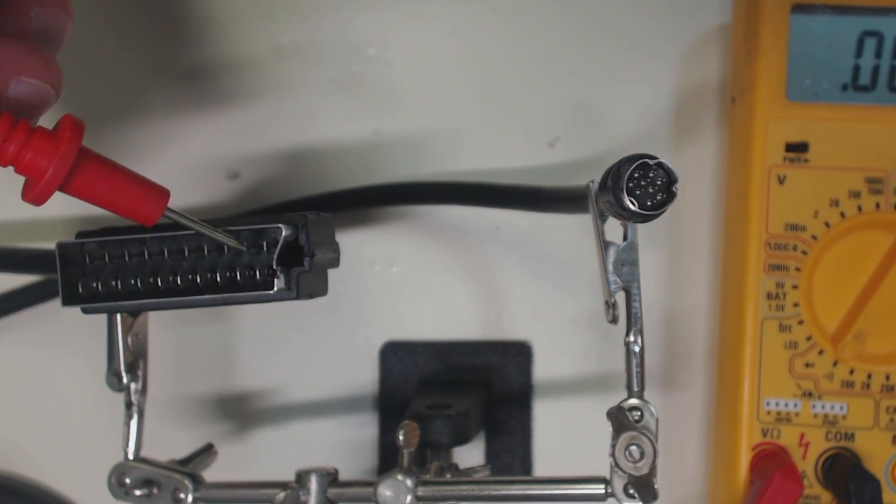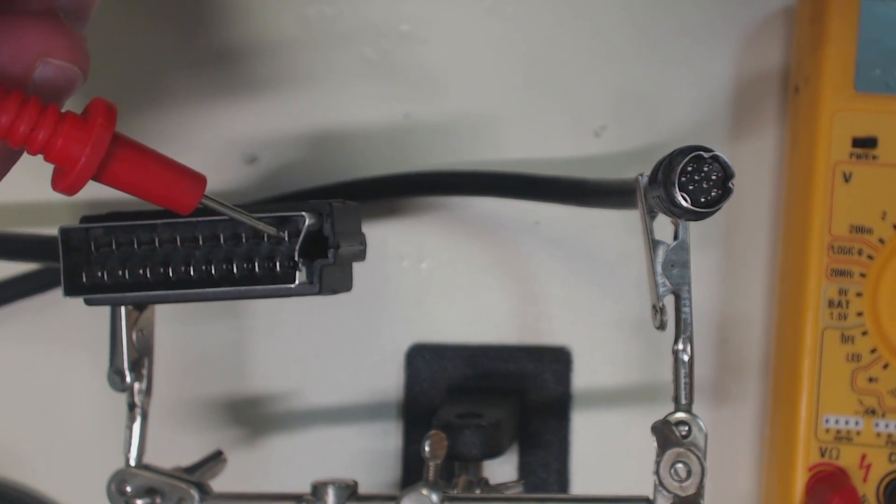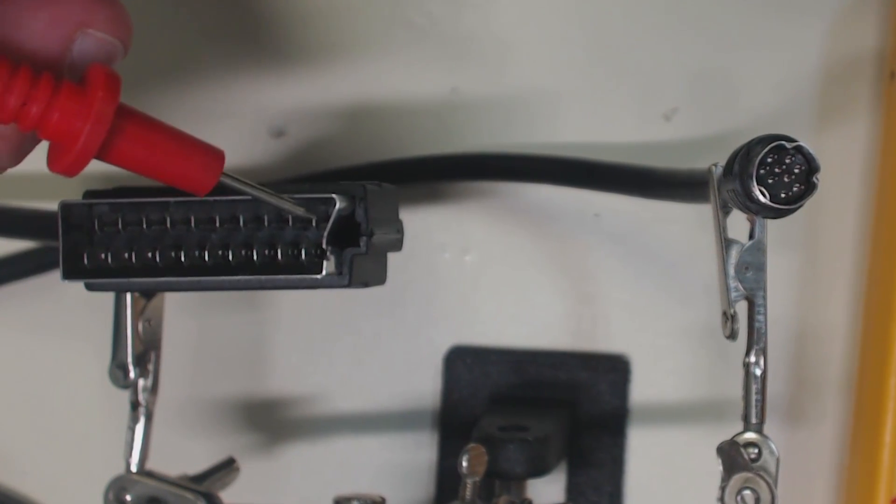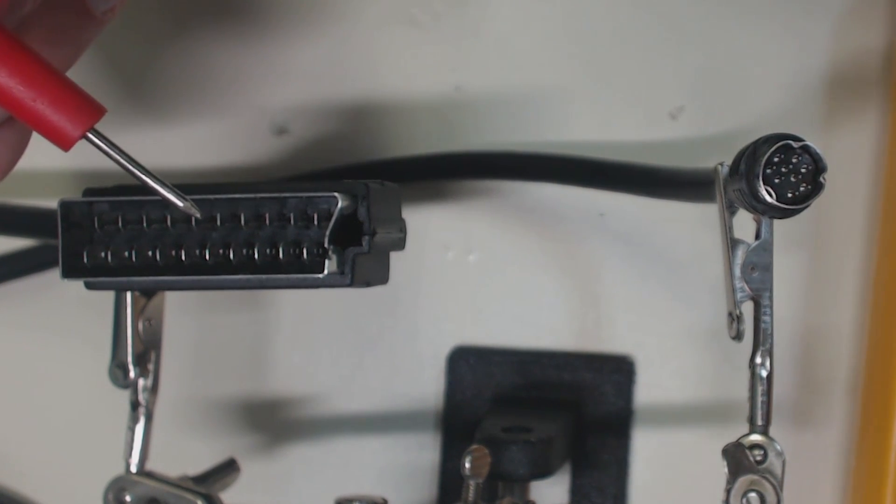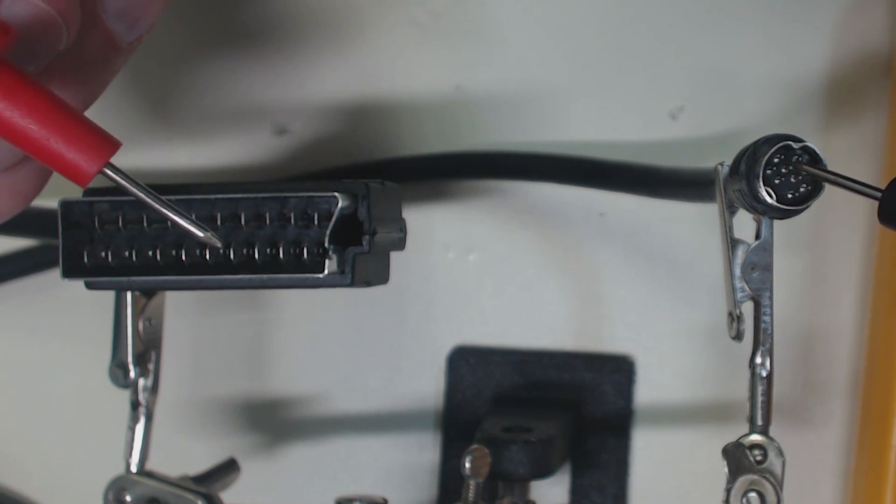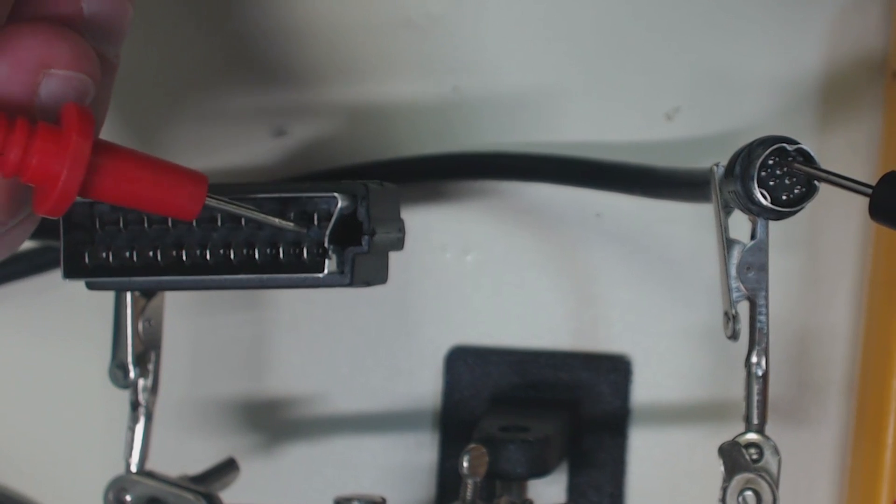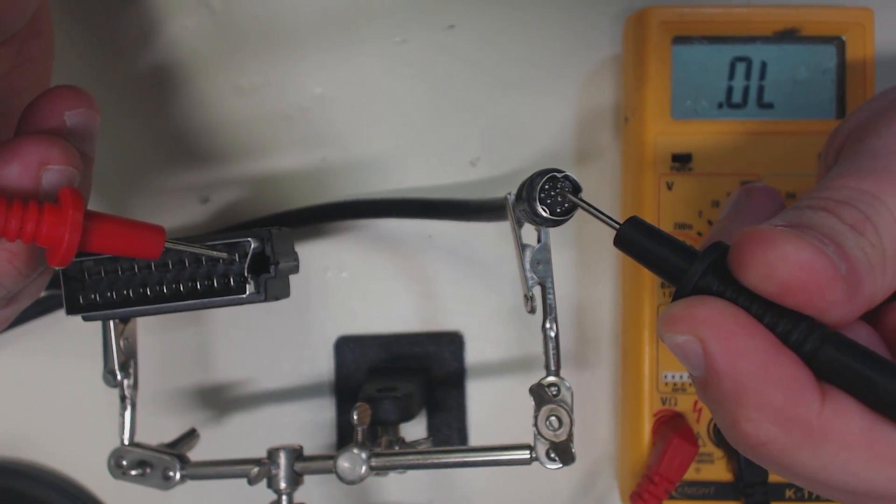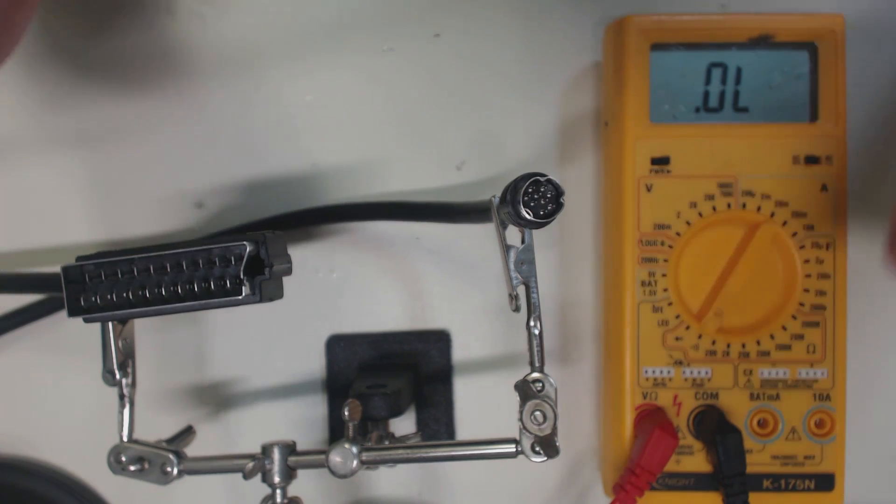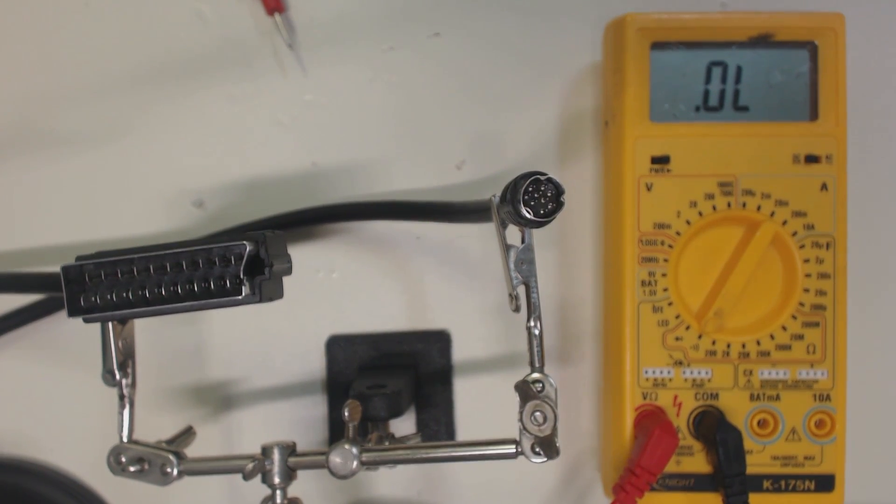So let's test the sync pins themselves. The SCART sync pin is always going to be this one right here. This is on every SCART cable where you will find the actual sync signal. And for the Genesis I believe it's this one right here. So let's just test them together. We're getting nothing and as you can see also nothing on the meter. So okay let's pop this thing open and go from here.